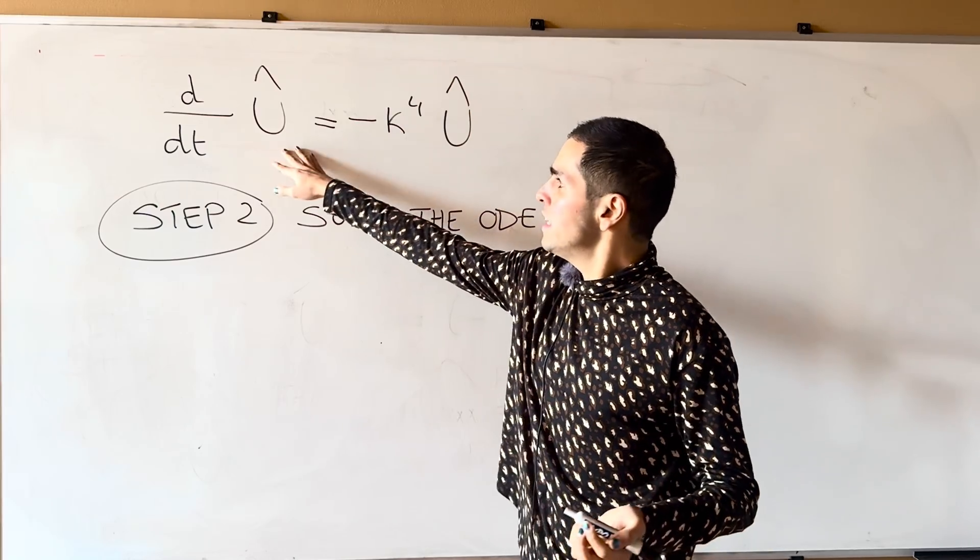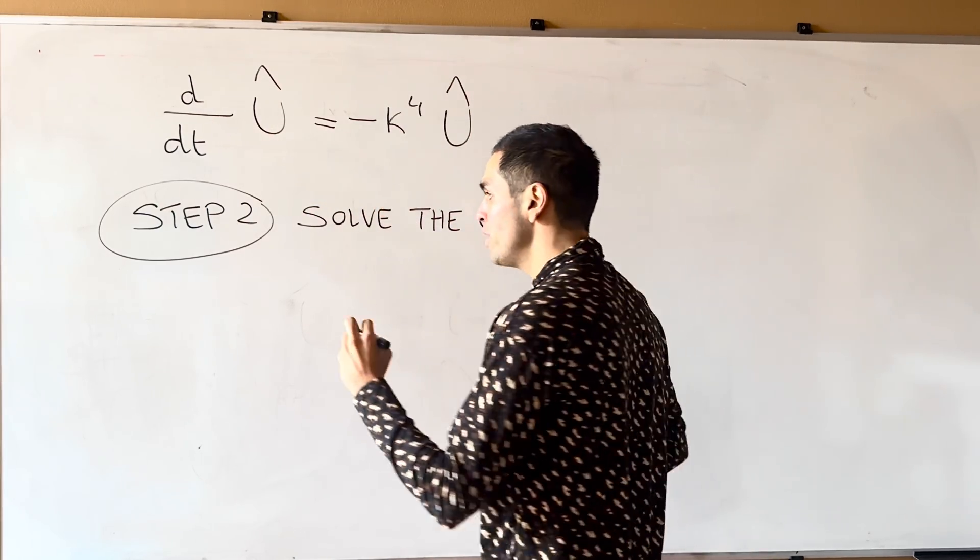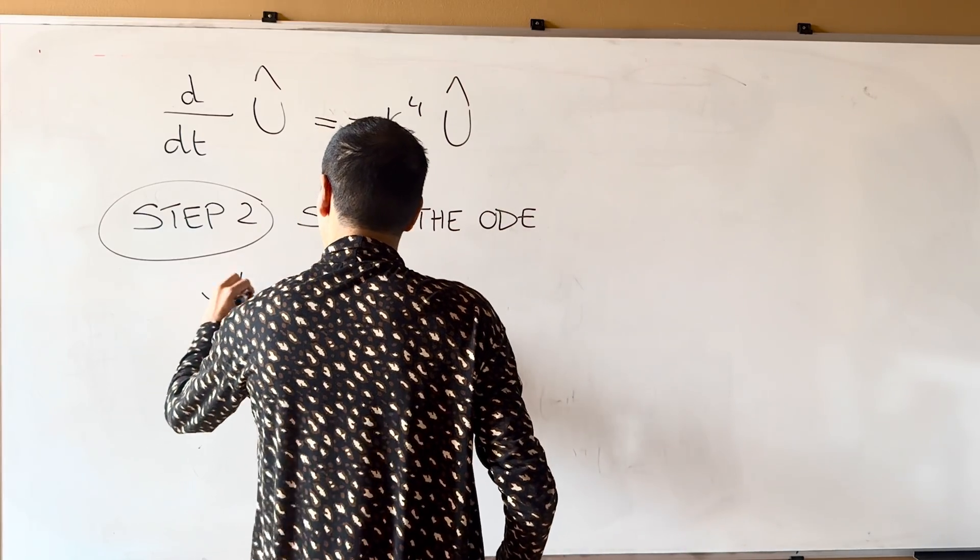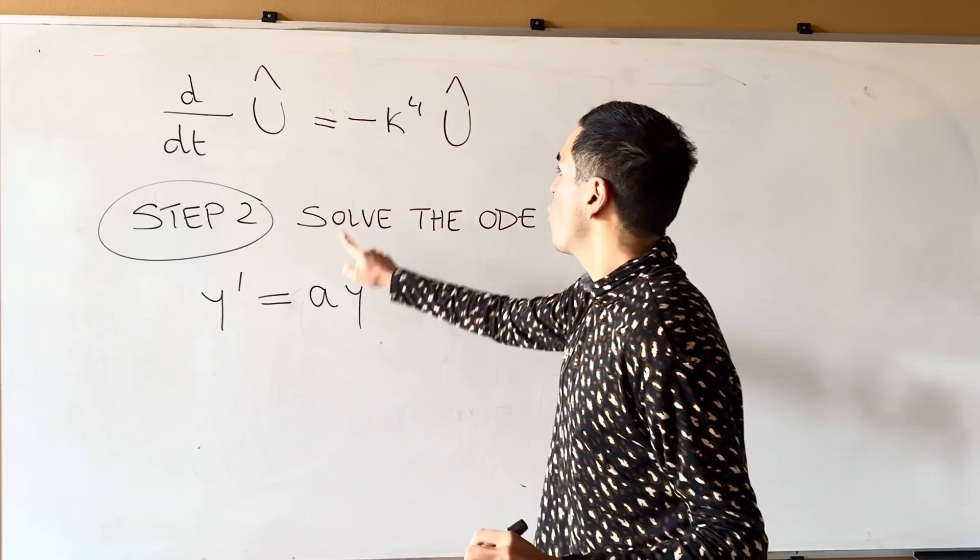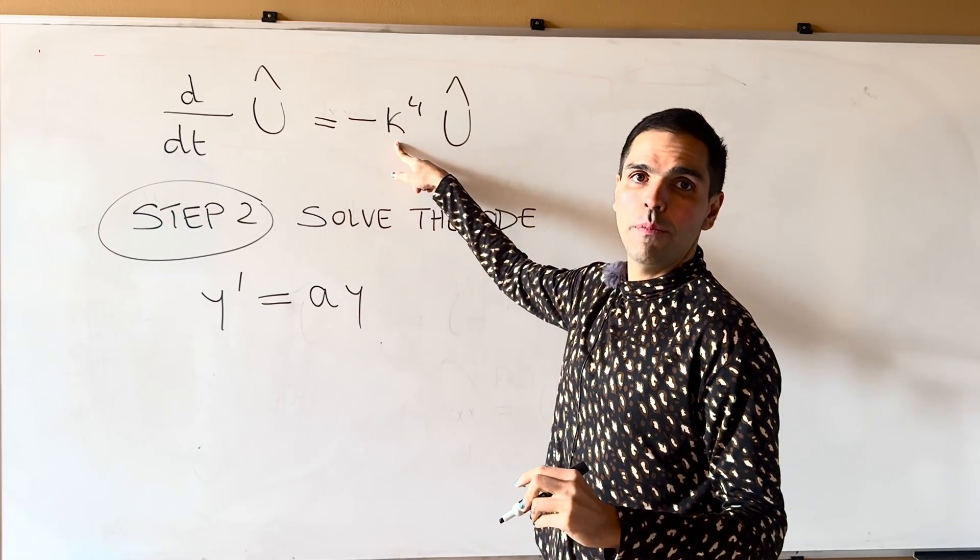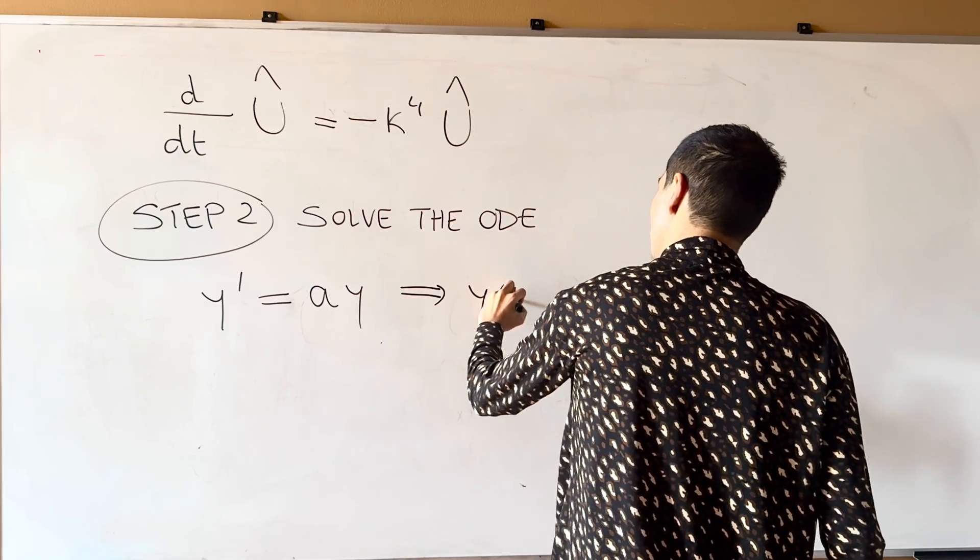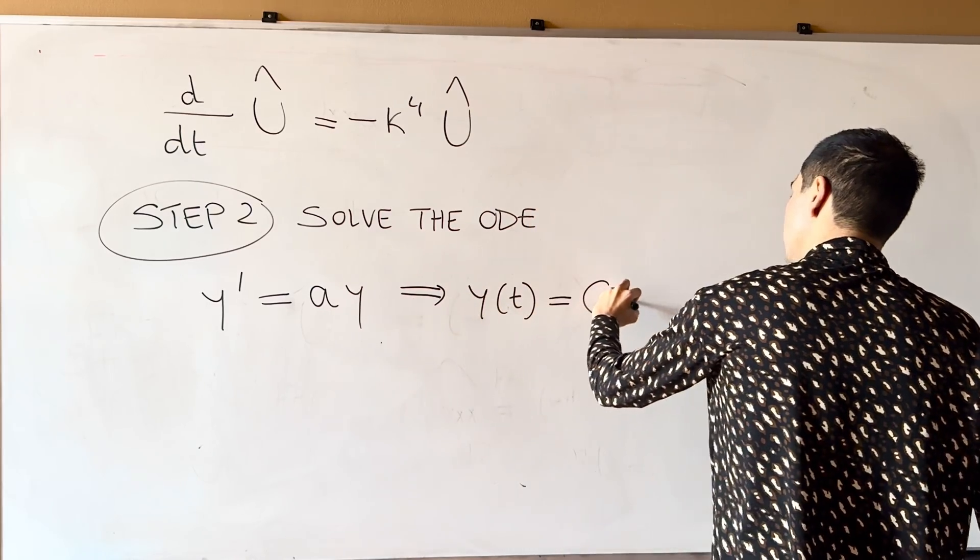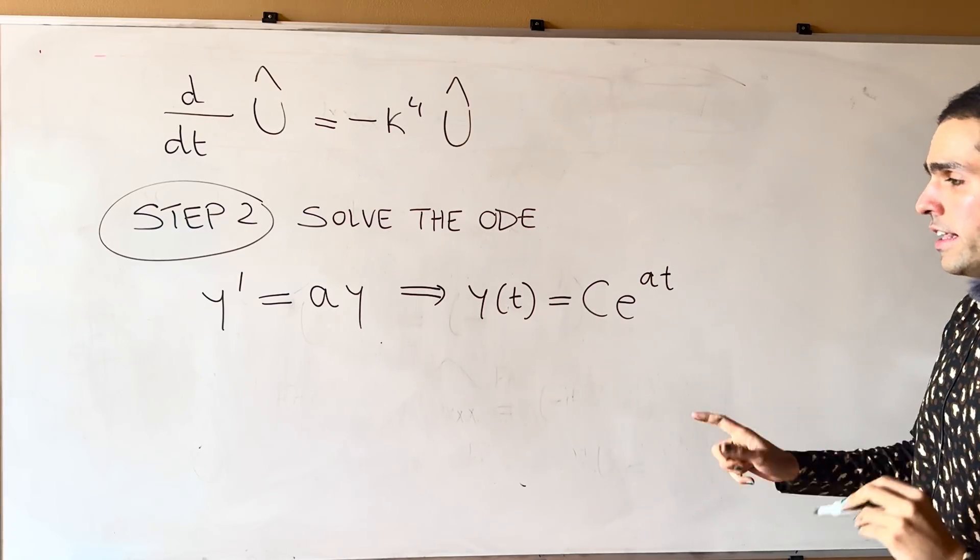Because it is an ODE with T, this is the same thing as Y prime equals AY, where A is minus kappa to the fourth, which doesn't depend on T. And remember, the solution of this is CE to the AT.